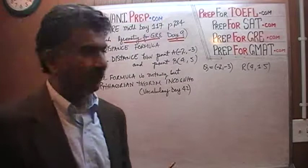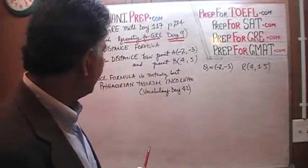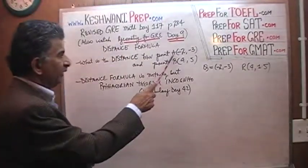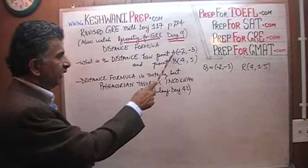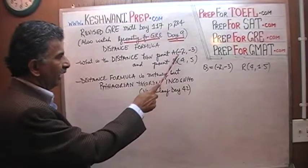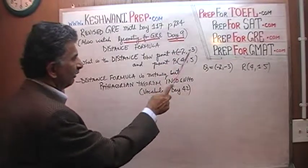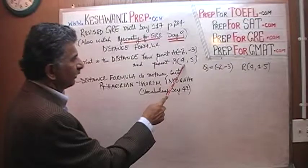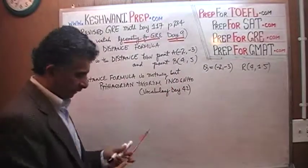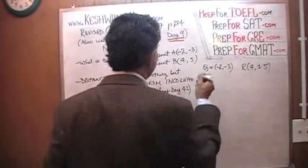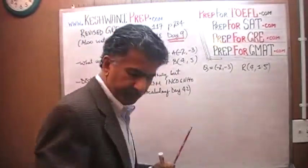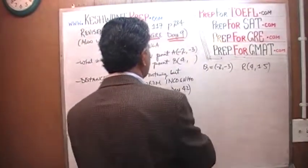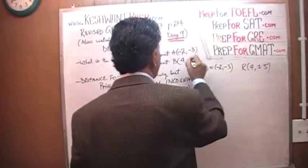What is the distance formula? A distance formula is nothing but an application of the Pythagorean theorem — it is Pythagorean theorem incognito. The points I have here, A and B, are different from Q and R in the problem. So I have negative 2, negative 3 and 4 and 1.5.